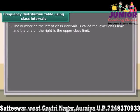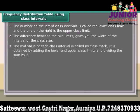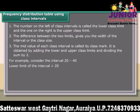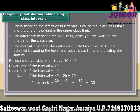The number on the left of class intervals is called the lower class limit, and the one on the right is the upper class limit. The difference between the two limits gives you the width of the interval or the class size. The mid-value of each class interval is called its class mark, obtained by adding the lower and upper class limits and dividing the sum by 2. For example, consider the interval with lower limit 20 and upper limit 40. The width is 40 minus 20 equals 20. The class mark is (20 plus 40) divided by 2 equals 60 divided by 2, which equals 30.